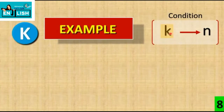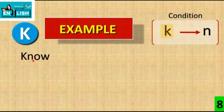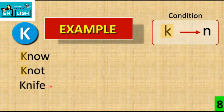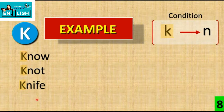जैसा मैंने बताया, K के बाद N आएगा तो K silent रहेगा। First word है Knot — K के बाद N आया तो K silent होगा। Knife में भी K silent है। जब भी K के बाद N आएगा तो K silent होगा।